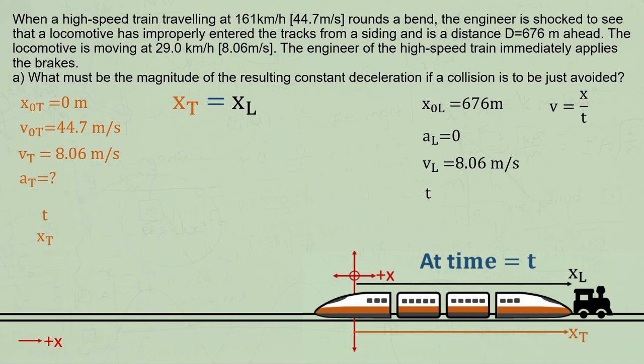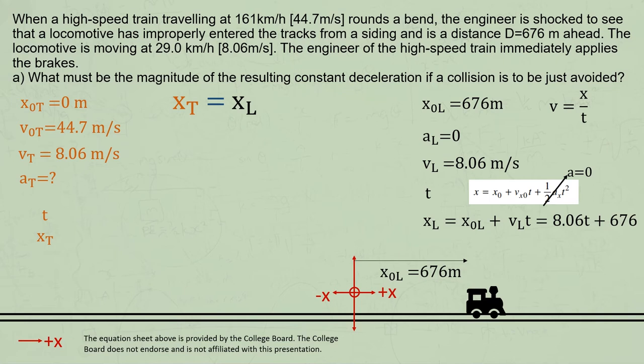So now let's figure out the displacement of each as a function of time. For the locomotive, its displacement is fairly easy to model. It starts 676 meters ahead of the origin, and then each second it moves a further 8.06 meters away. I suggest just thinking about this intuitively, but if you'd like to use a formula, we could use this one. The last part is 0 because the acceleration is 0.